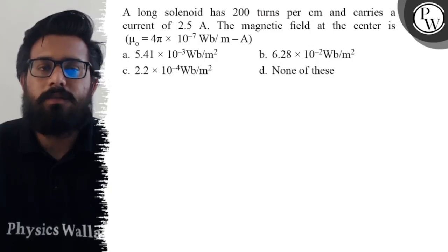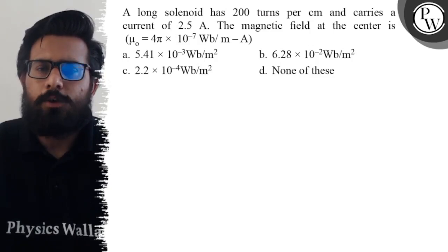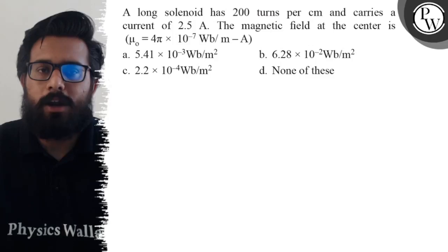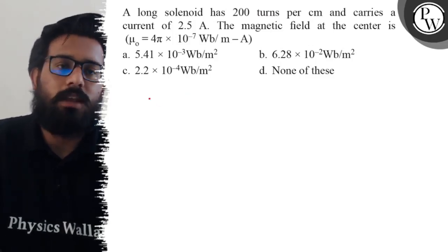Your first option is 5.41 × 10^-3 Weber per meter square. Your second option is 6.28 × 10^-2 Weber per meter square. Your third option is 2.2 × 10^-4 Weber per meter square. And your fourth option is none of these.